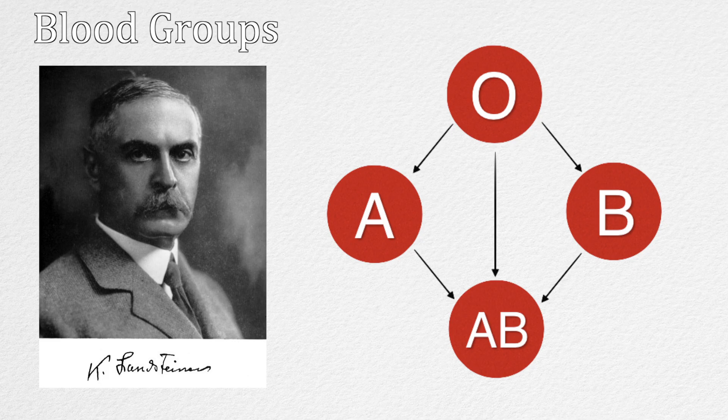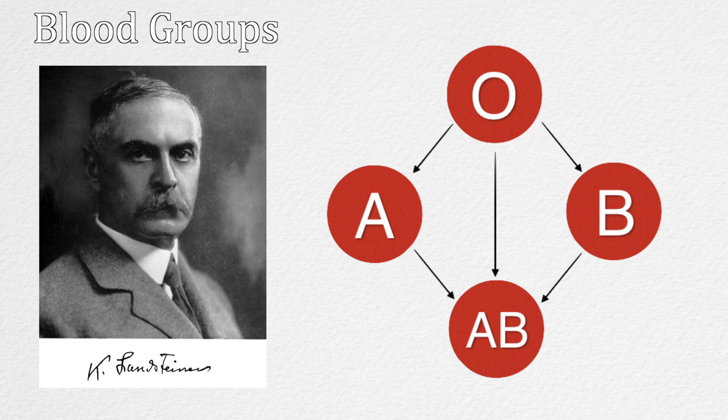Each of the blood types has specific antibodies and antigens that cause the blood to clot when other blood types are introduced. Above is a graphic that demonstrates which blood types can give and receive to one another.